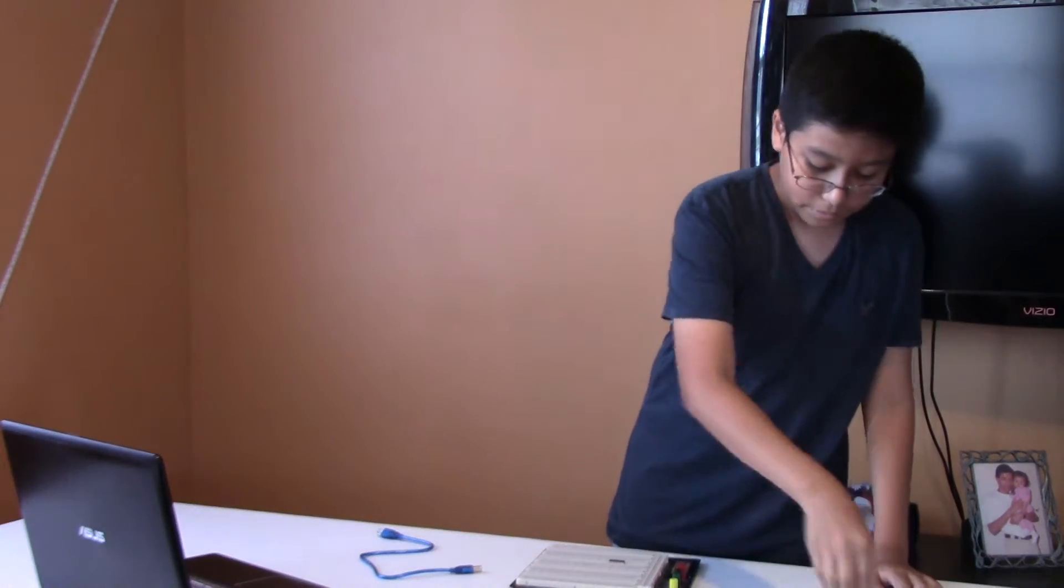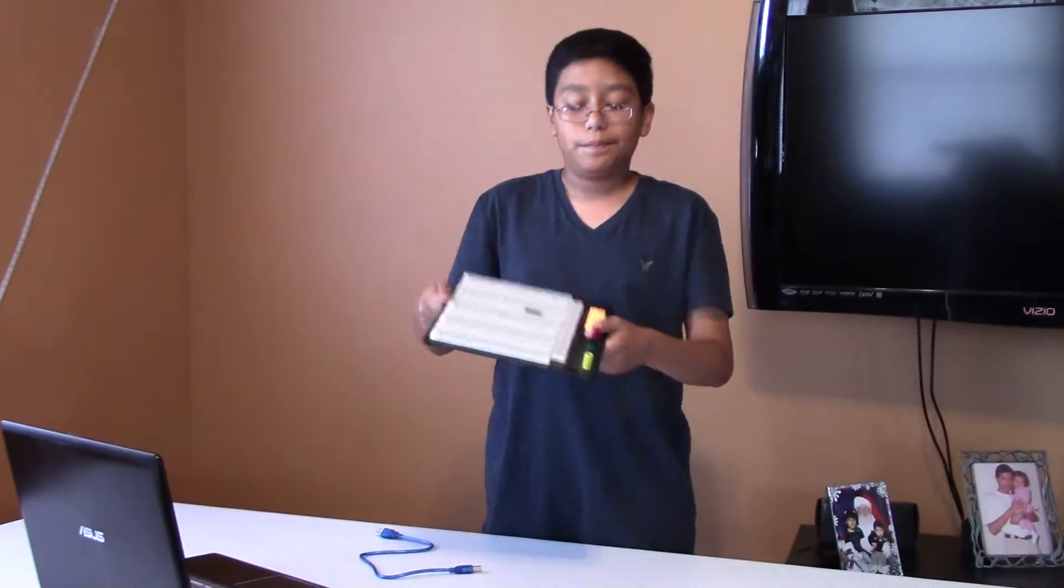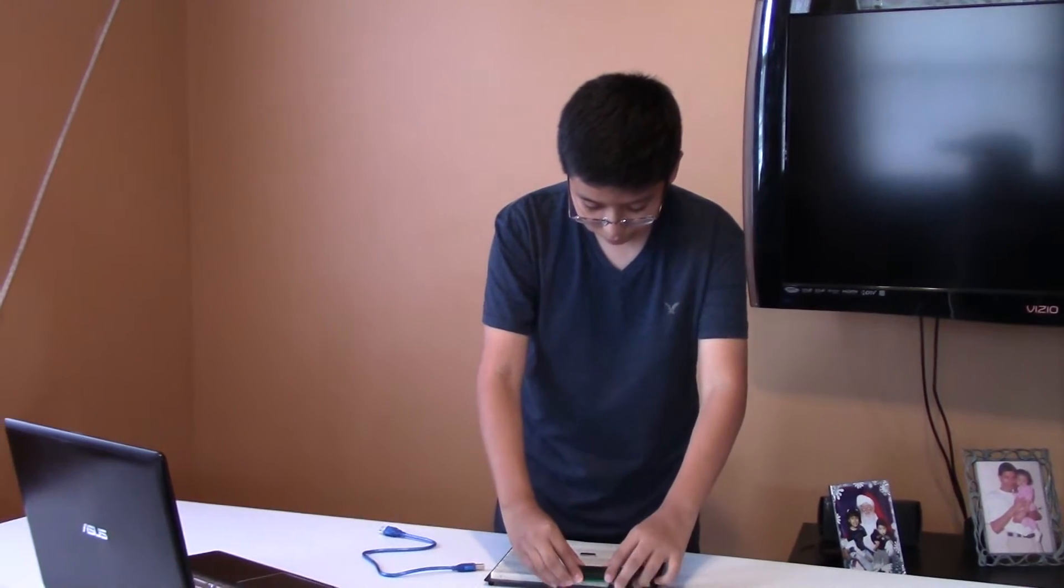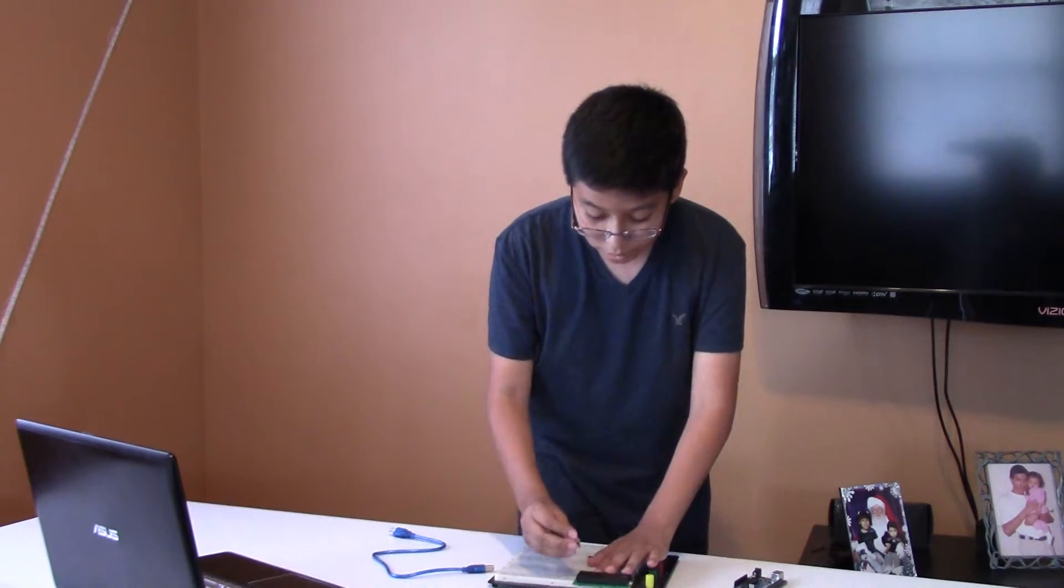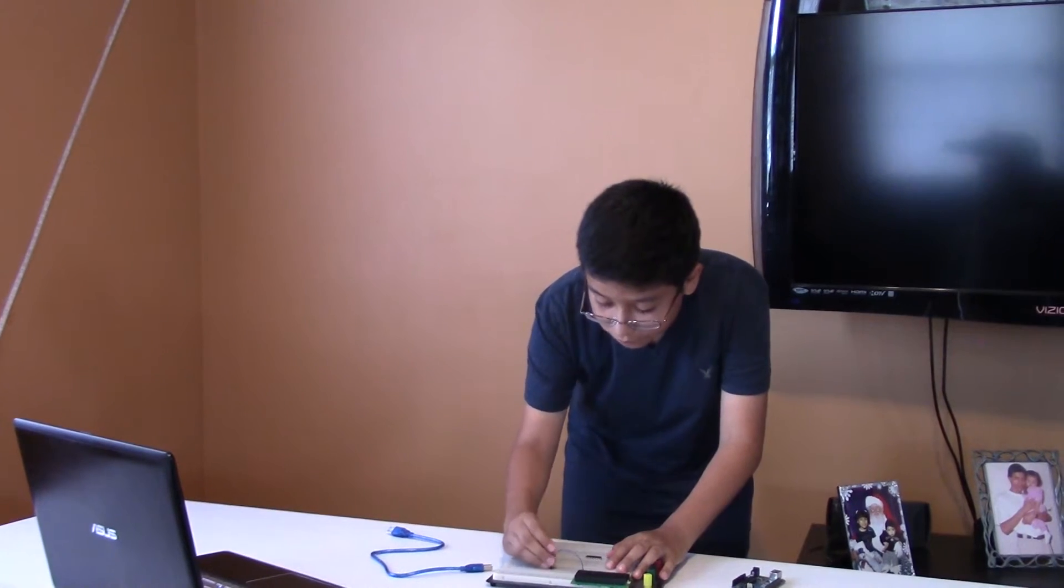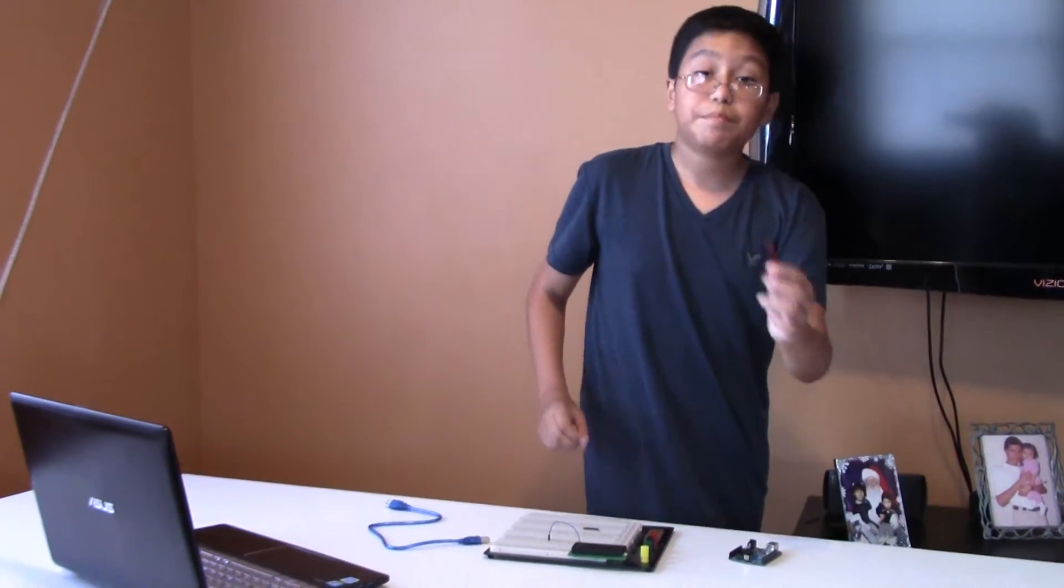First we're going to put the LCD on the breadboard and I would like you to watch my previous video on making a calculator where I also use the LCD. The first pin on the LCD goes to ground, the second pin goes to power or five volts.